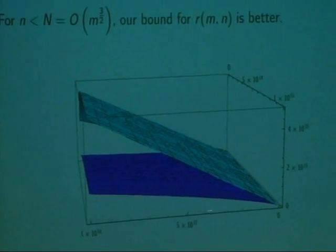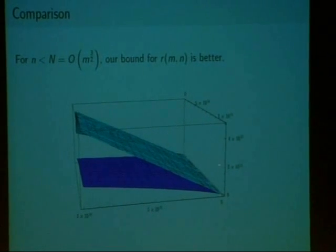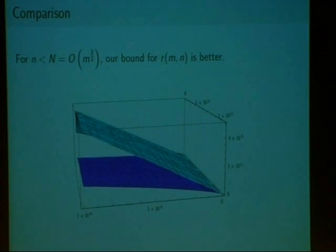Here, you'll see in blue our new upper bound, and the teal upper bound is the previous upper bound. It turns out that when you have n columns, when n is less than some number on the order of the number of rows to the power of three halves, our bound is significantly better.